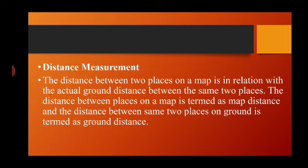Distance measurement means the distance between two places on a map in relation to the actual distance on the ground. The distance between places on a map is termed as map distance, and the distance between the same two places on the ground is termed as ground distance.